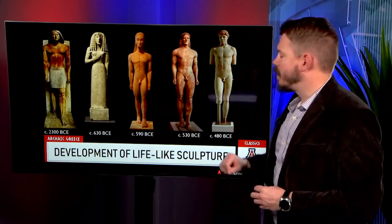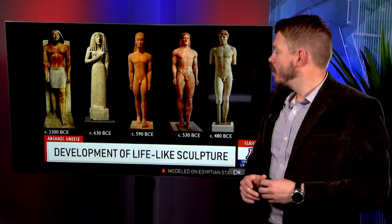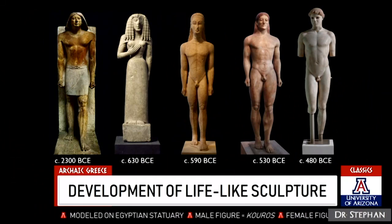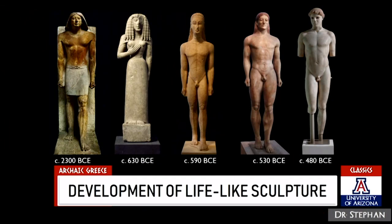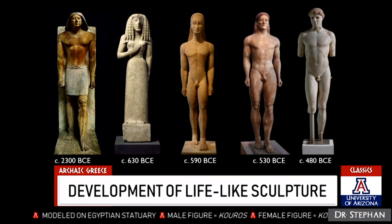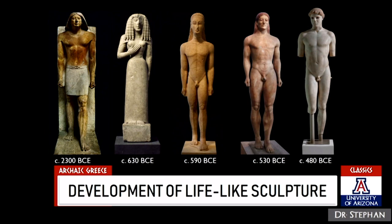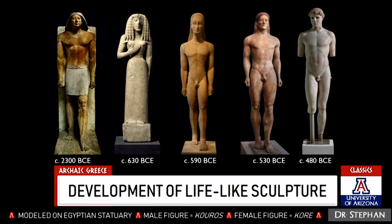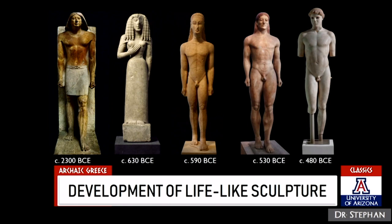We also get huge developments in material culture. We see a move towards lifelike, life-size sculpture. The four sculptures on the right are all Greek, and over on the left is an Old Kingdom sculpture from Egypt. You can see the Greeks borrowing this style. When this picks up in Greece around the middle of the 7th century BC, this is the exact time when Greece set up its first colony in Egypt — they were exposed to this sculpture and started adopting it for themselves.